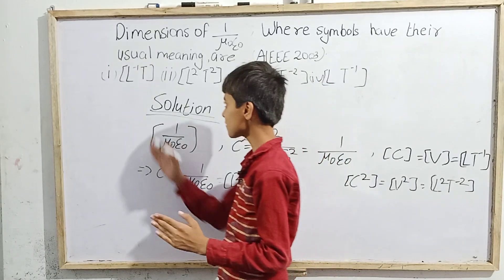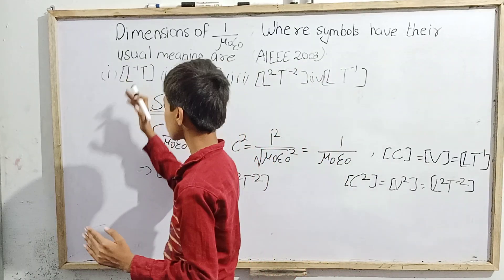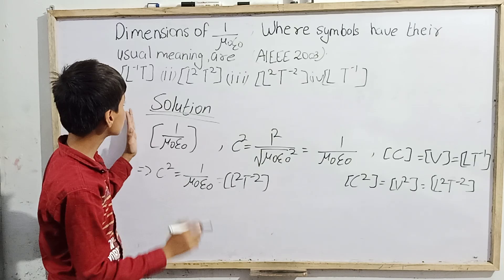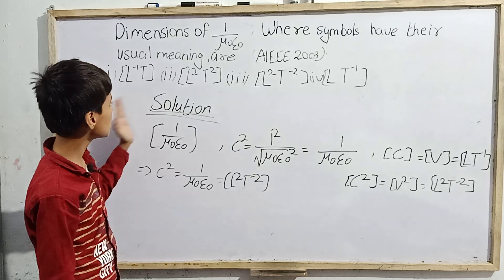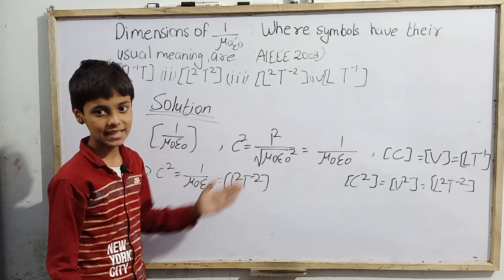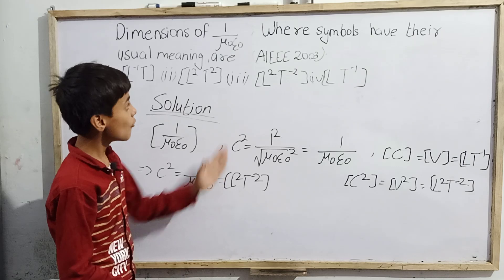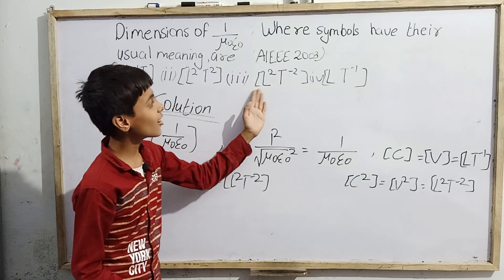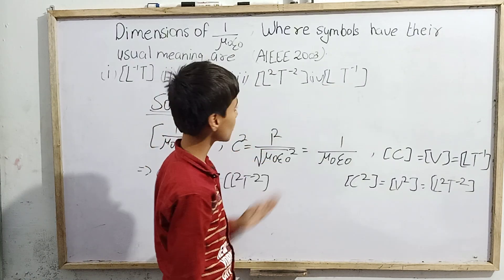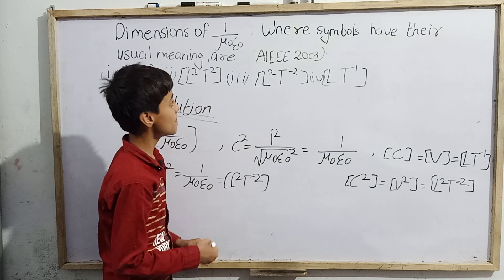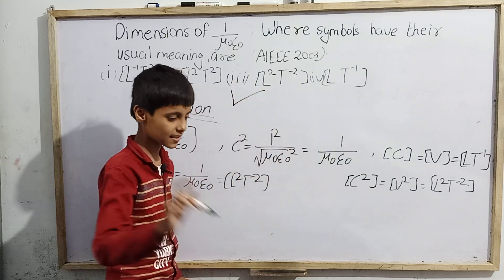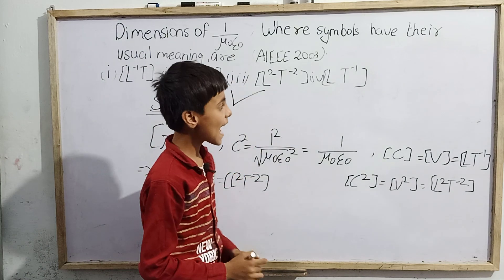Checking the options: the first option L⁻¹T is 100% wrong, the second option L²T² is also wrong, the third option L²T⁻² is correct, and the fourth option LT⁻¹ is wrong. Therefore, option number three is absolutely the correct answer.